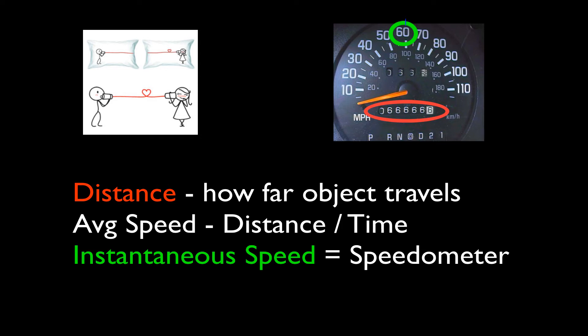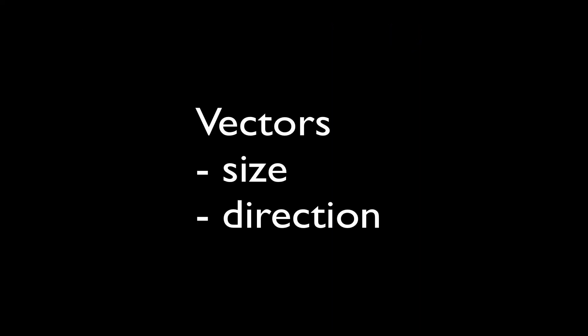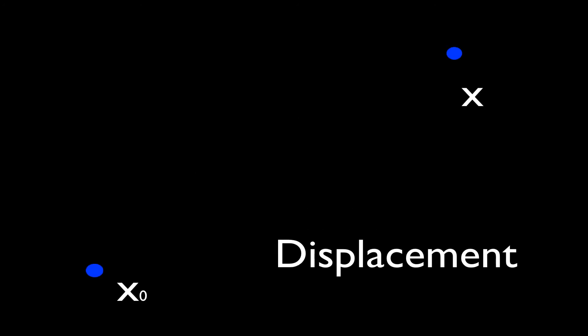It turns out there's another kind of quantity in physics called a vector quantity. Vectors have both size and direction. An important one is displacement. You take the ending point and the beginning point and subtract them, get that length between the two, and also take note of the direction.